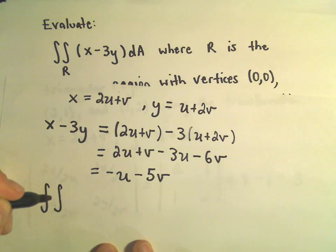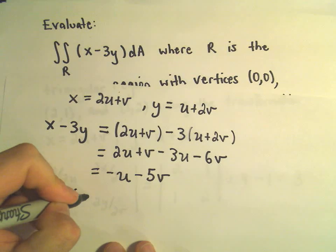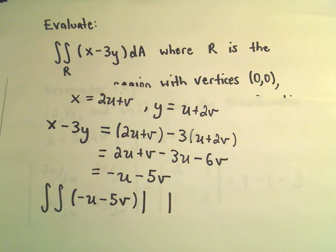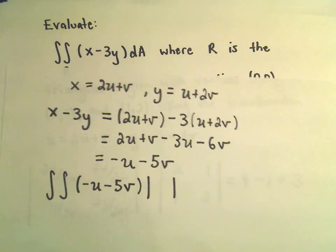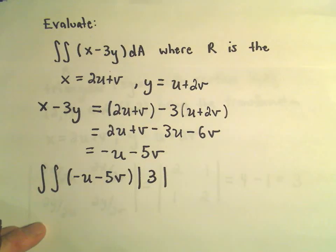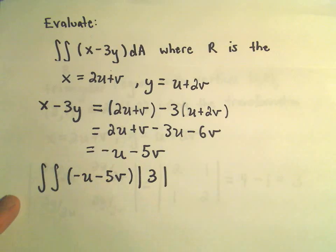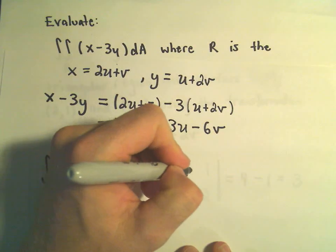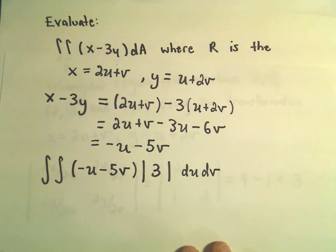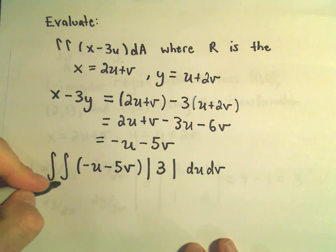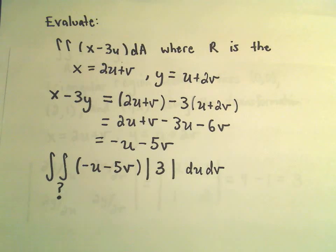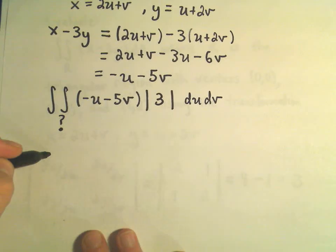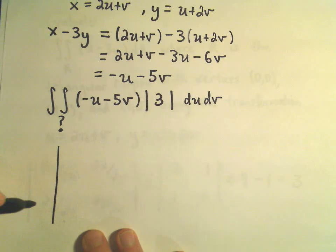Our new integrand is negative u minus 5v, multiplied by the absolute value of the Jacobian, which is 3. We can integrate with respect to u or v — it doesn't really matter which order. But I still have to figure out the region I'm integrating over in the UV plane, and that can be one of the tricky parts.